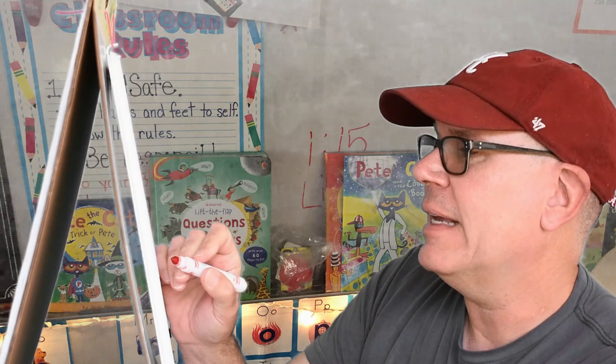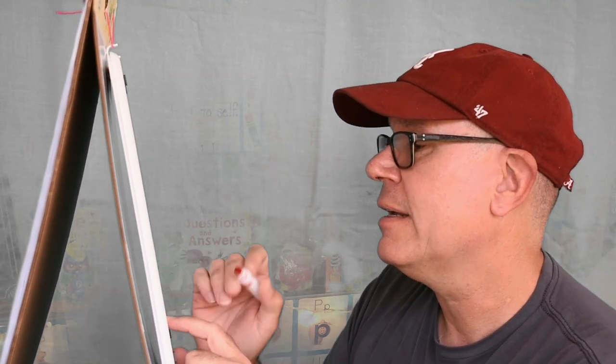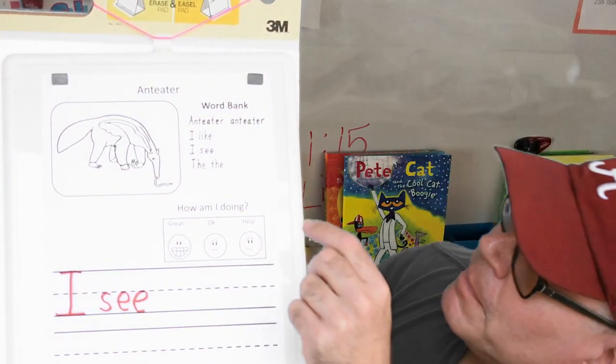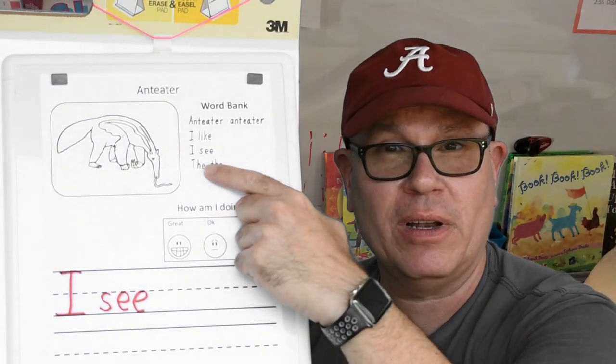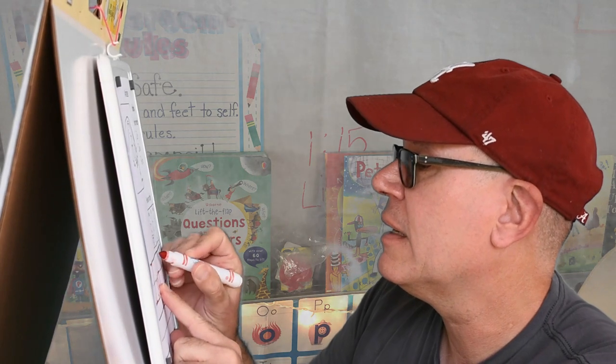So, I start out with a capital I, finger space, C, and it's a lower case S, E, E. I see what? What's the next word? In our word bank we have the and the. Do we use the capital letter the or the small letter the? Right! The small letter. I see the, finger space first. Finger space.